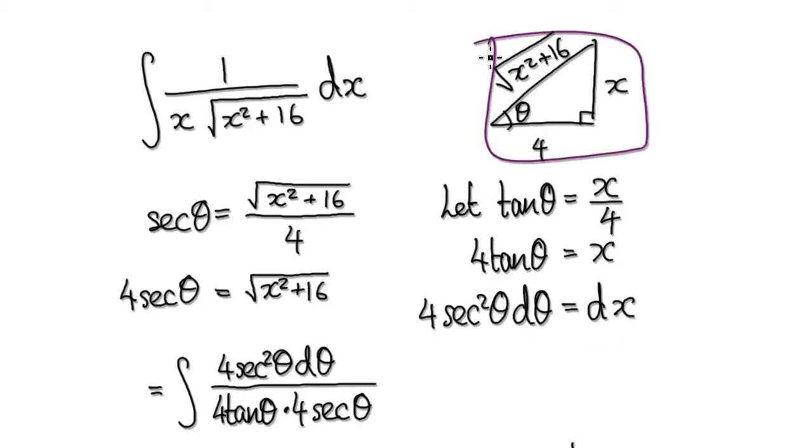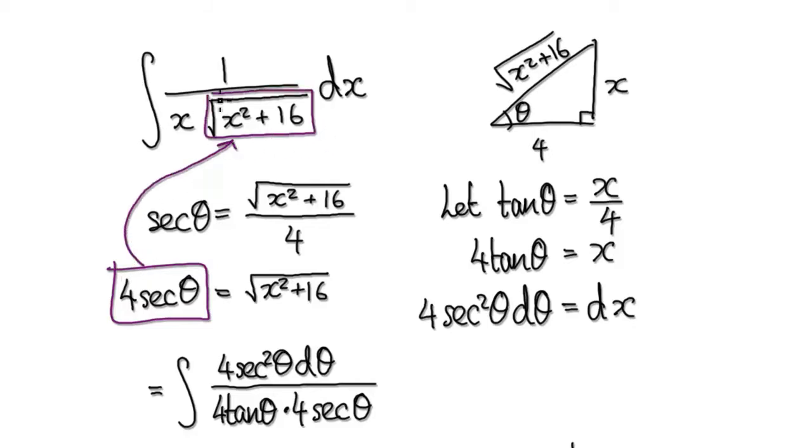Now look at the same diagram. Secant theta will be hypotenuse over adjacent, so secant would be this. Times both by 4, that would take us to here. Now we can put this into this thing, into this block here, and then put this thing into this thing here.